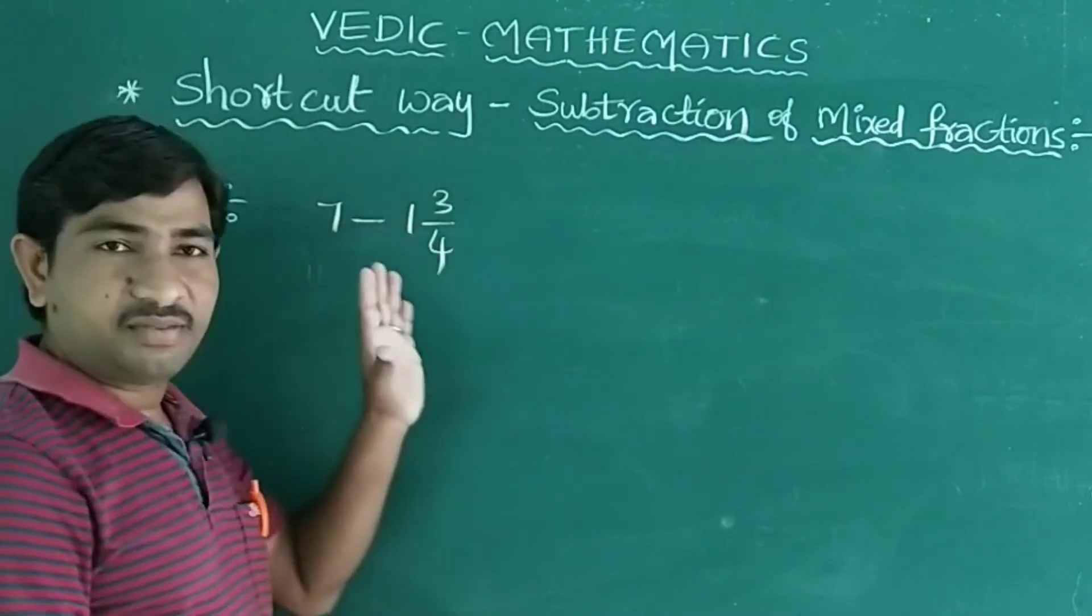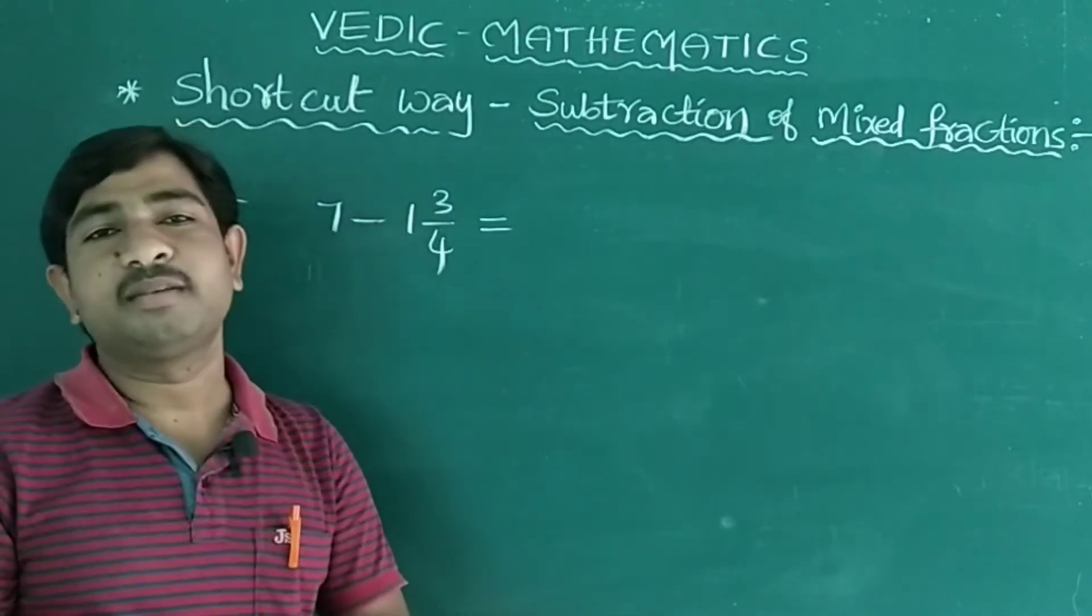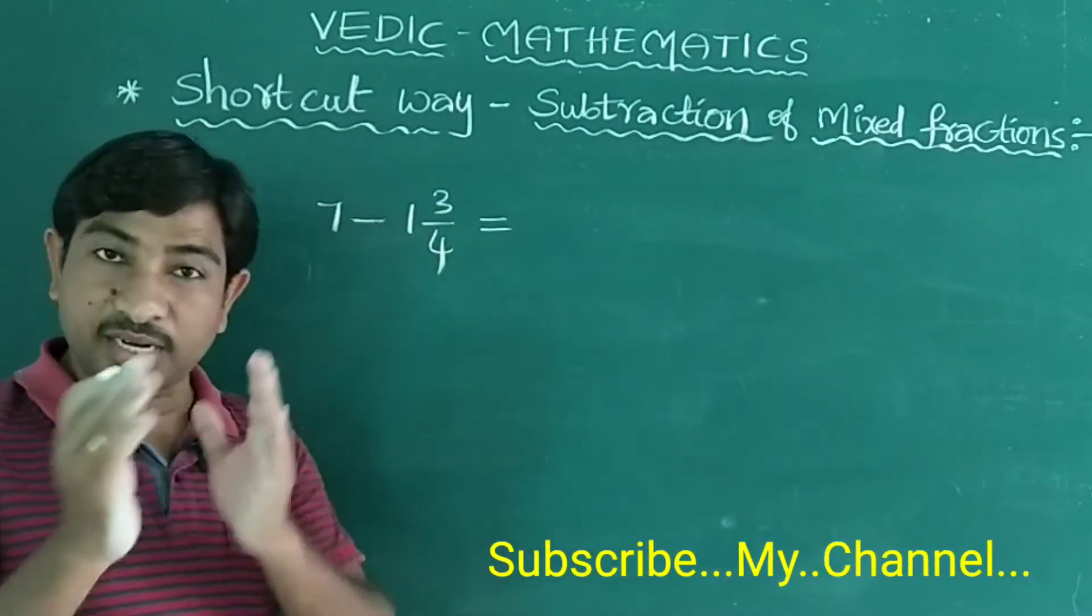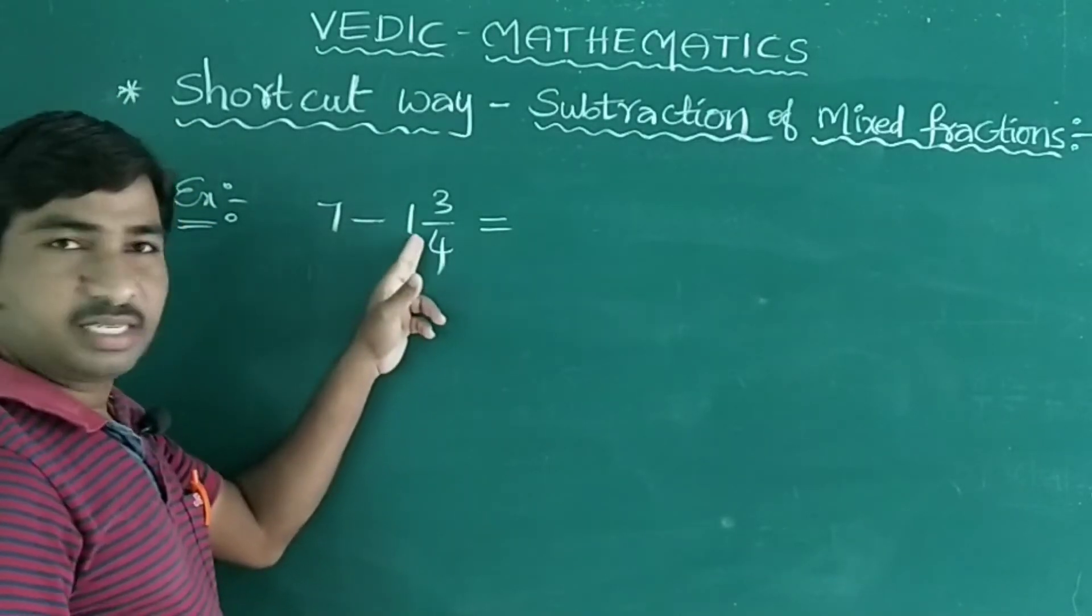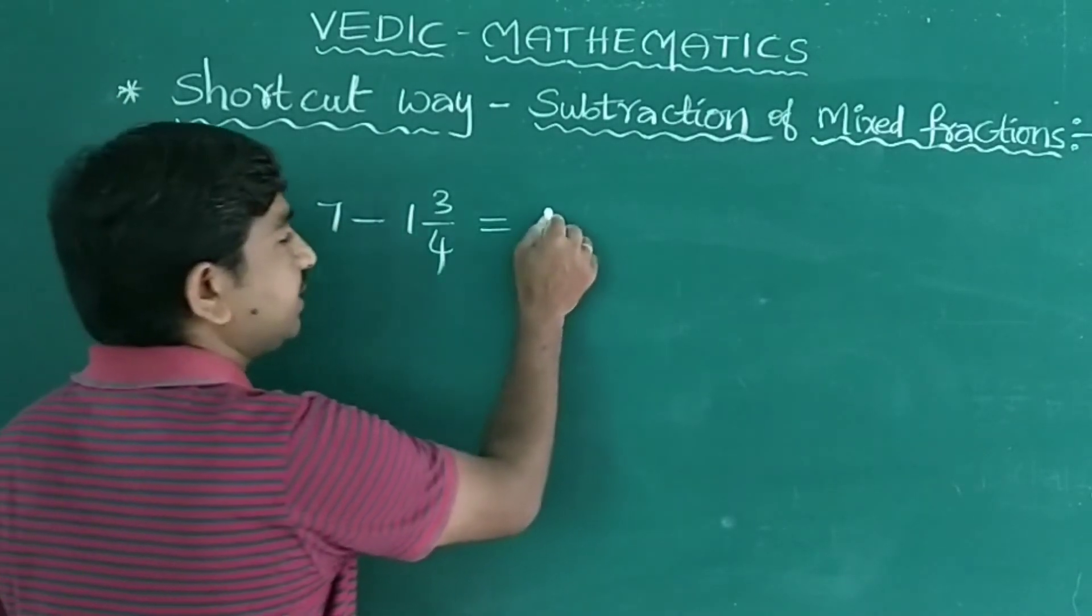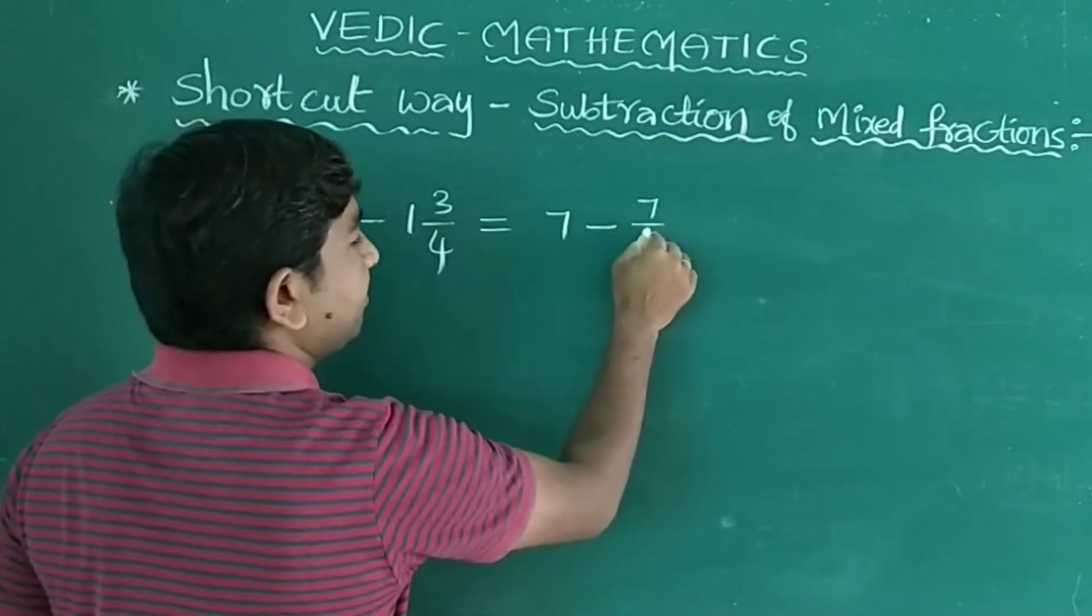In this, first of all, I will explain the subtraction in the basic method or traditional method. What is that? Simply we can write it as, convert them. First it is 7 as it is minus, so 4 times 1 is 4 plus 3, 7/4.